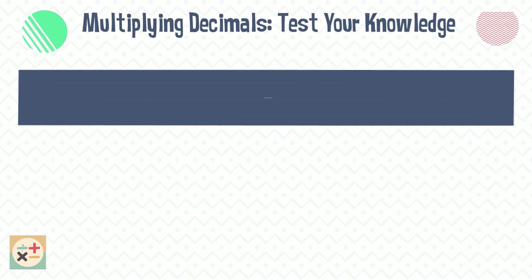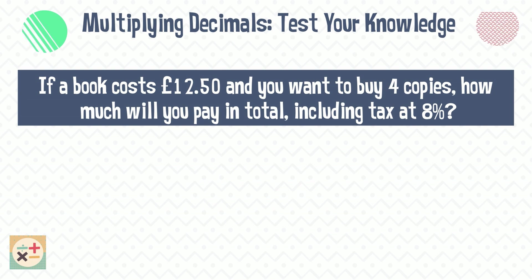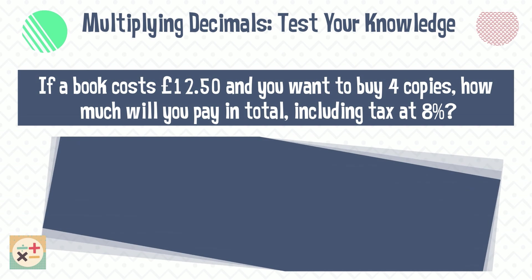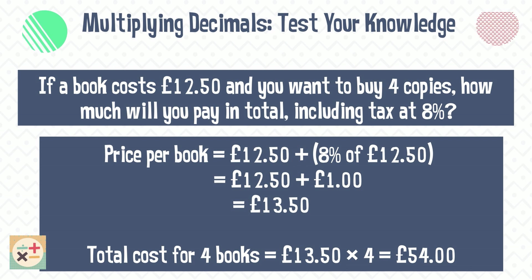Question four: if a book costs £12.50 and you want to buy four copies, how much will you pay in total including tax at 8%? Firstly, calculate the price per book by finding 8% of £12.50 and adding this to the price, then multiply this by four. Therefore the total cost for four books is £54.